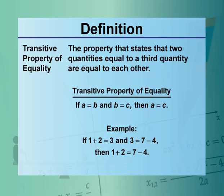Transitive property of equality: the property that states that two quantities equal to a third quantity are equal to each other.